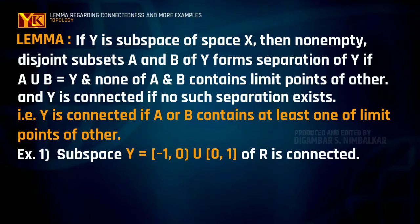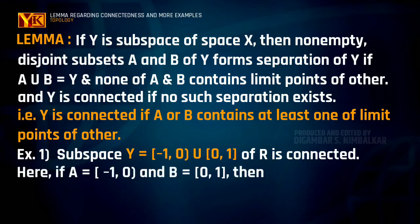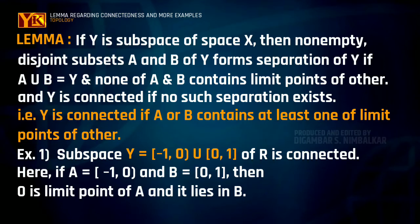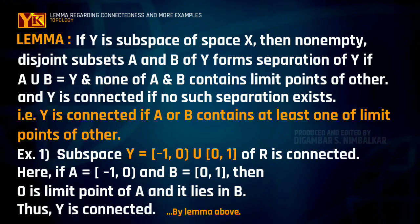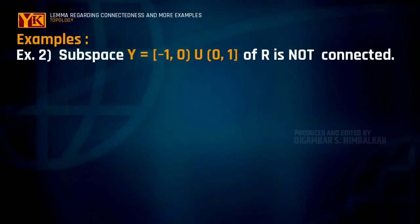For example, consider Y = [-1, 0) ∪ [0, 1], which is a subspace of ℝ. If we let A = [-1, 0) and B = [0, 1], we can see that 0 is a limit point of set A such that it also belongs to interval B. Thus by the lemma, the space Y is connected, because a limit point of one set is contained in the other.